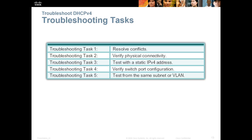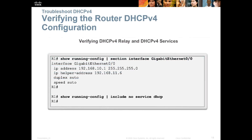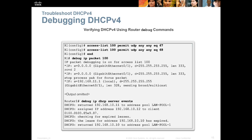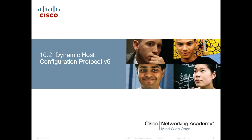You can verify routing and DHCP configuration using appropriate show commands. For debugging DHCPv4, the 'debug ip dhcp' option is always available. Now let's move on to DHCPv6 material.